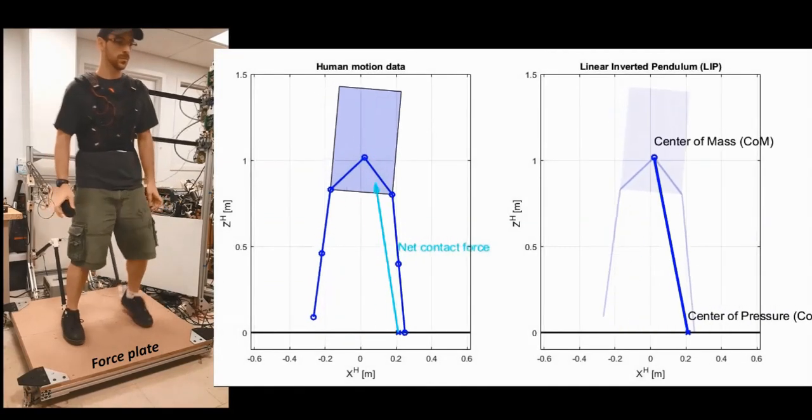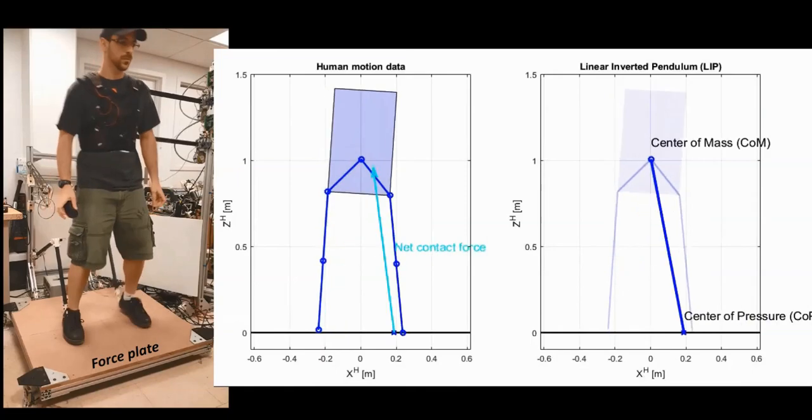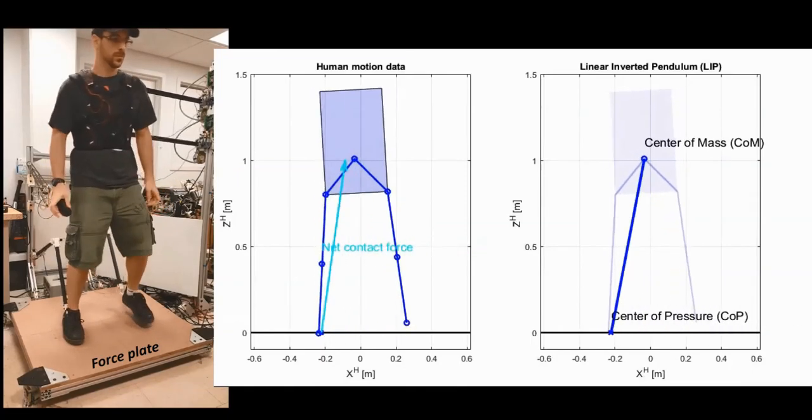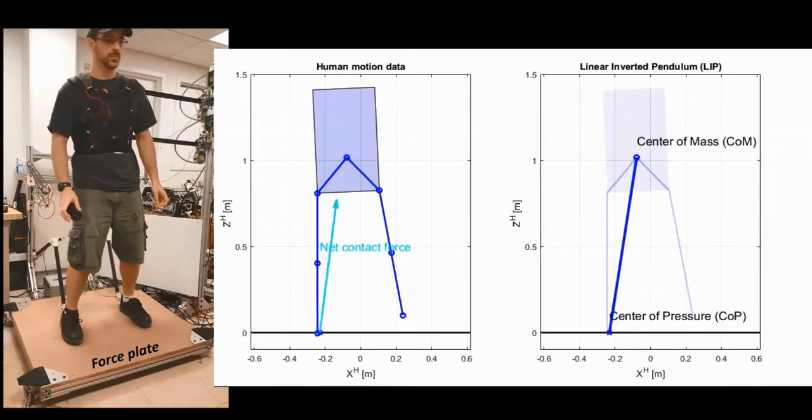We condense this information using a simple model for leg locomotion, the linear inverted pendulum, which is represented by the line that connects the center of mass and the center of pressure.